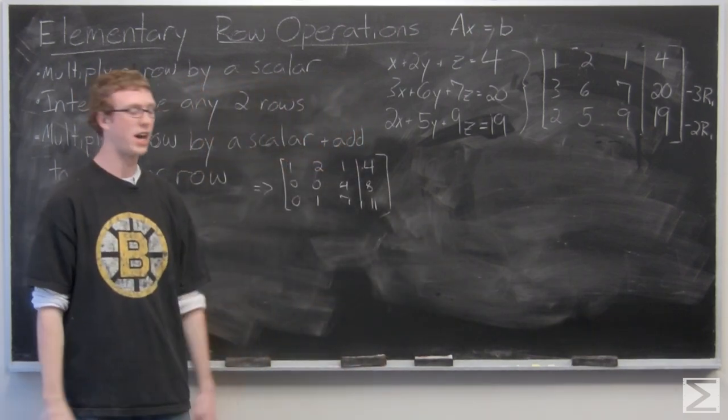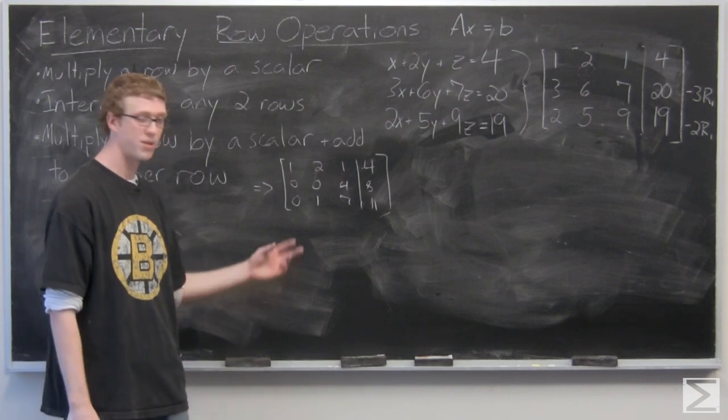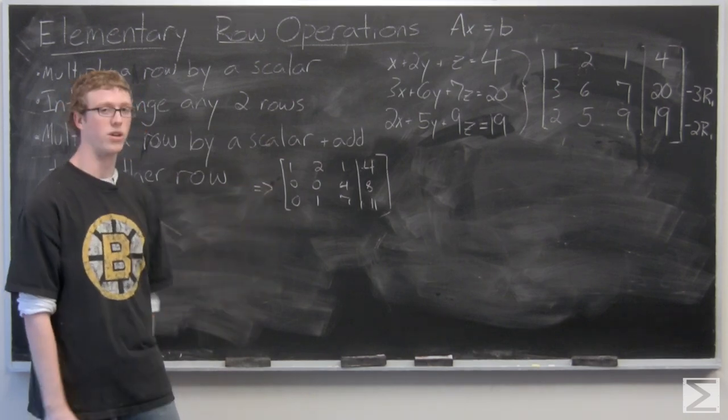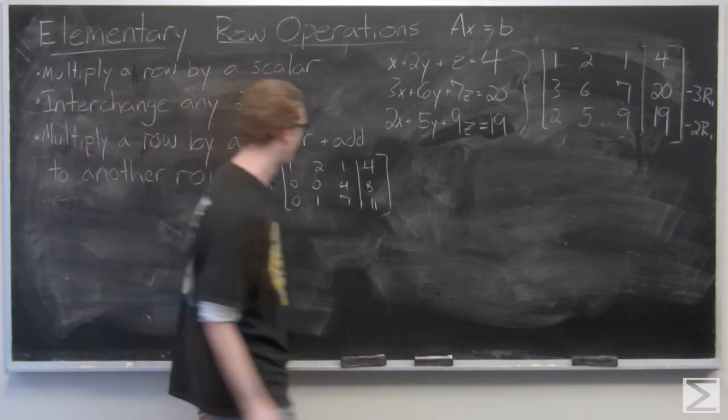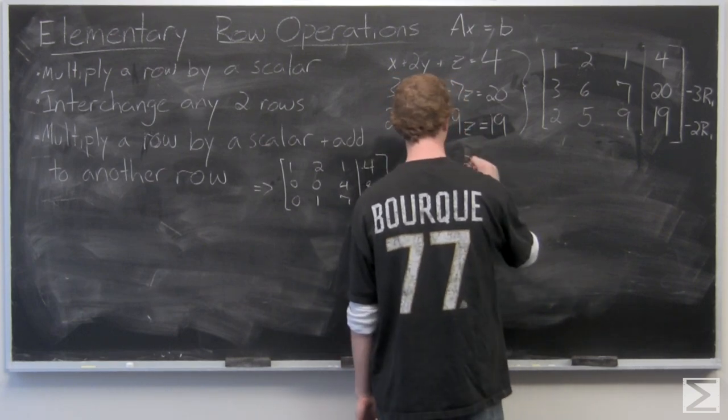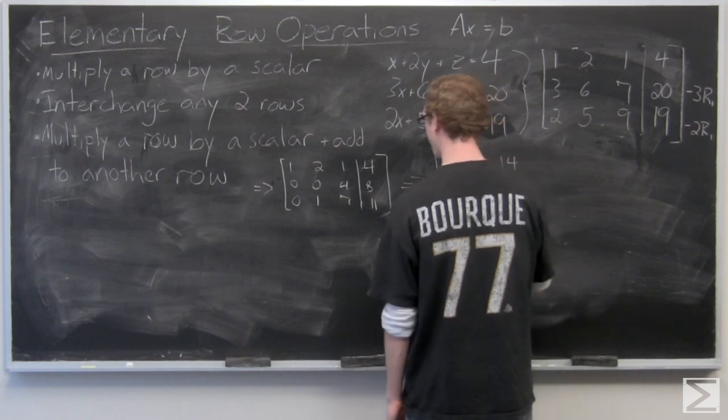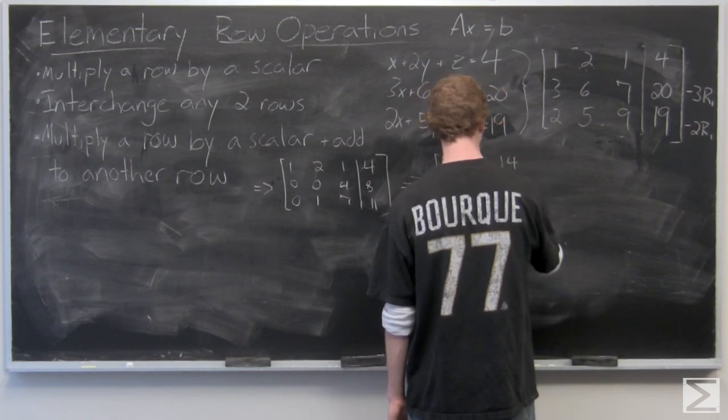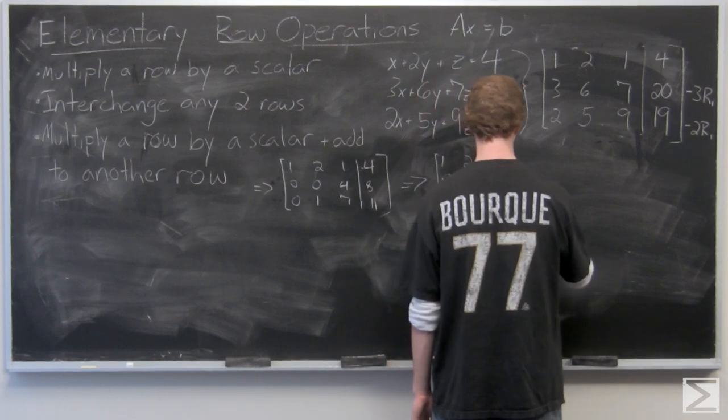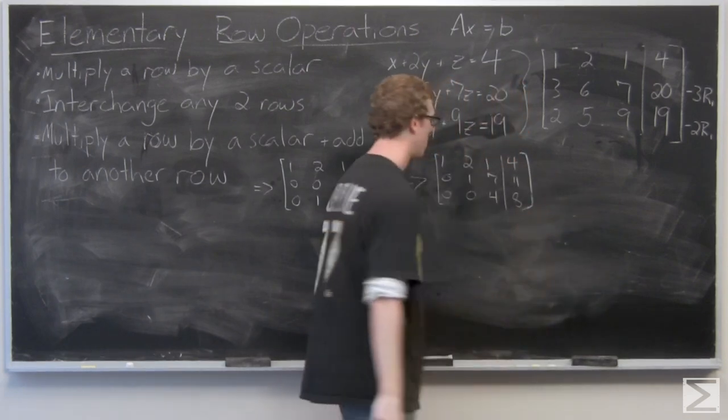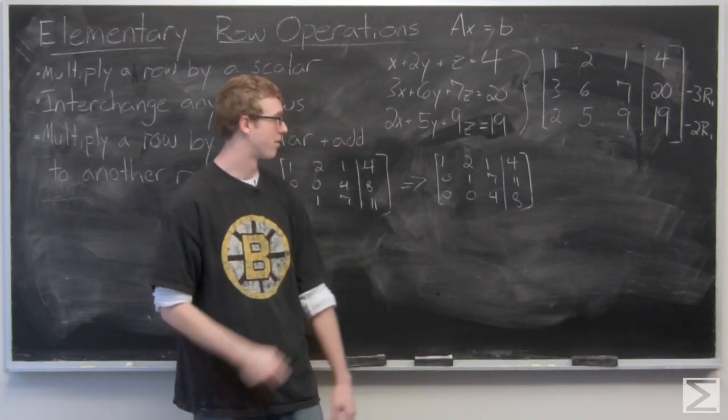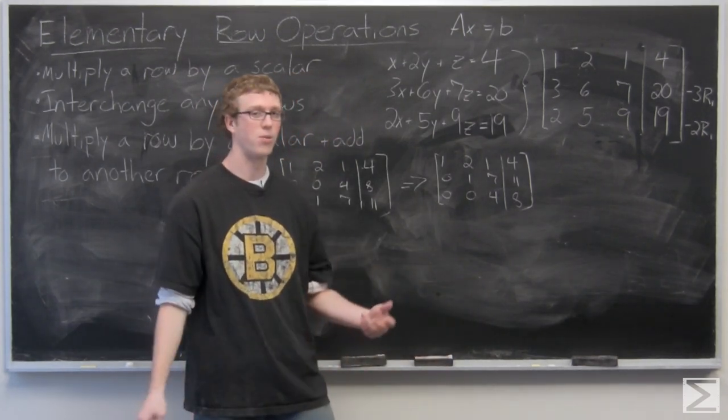Now we're going to take a look at another one of our elementary row operations. We're going to switch these two rows and then we're going to solve the equation. Now we could just solve and say that 4z equals 8, but we'd like to make it a little more simple and we're going to multiply that bottom row by 1 over 4.